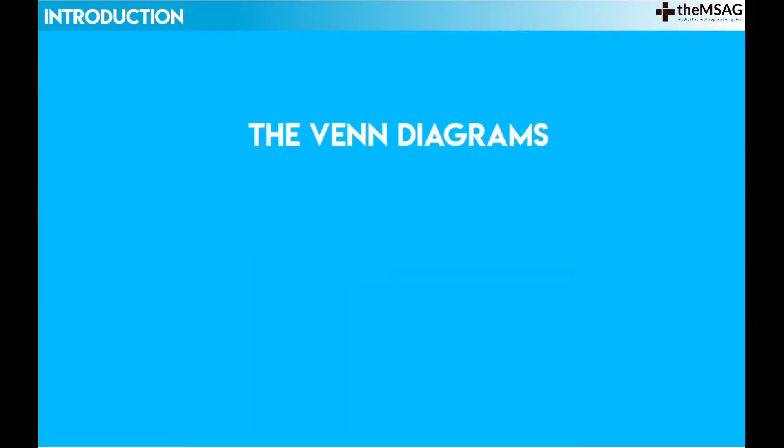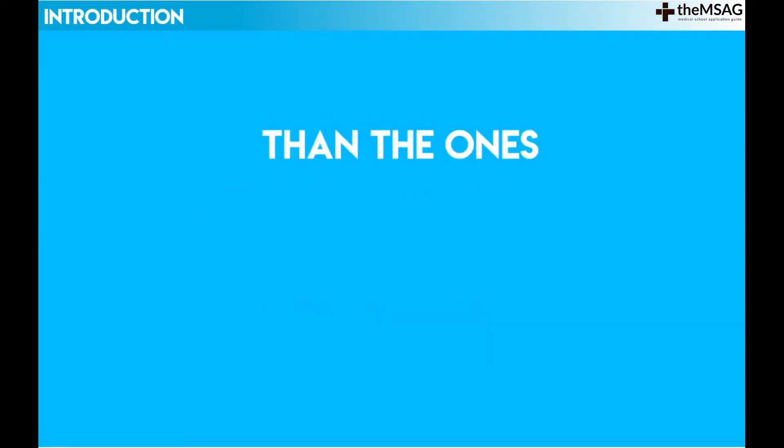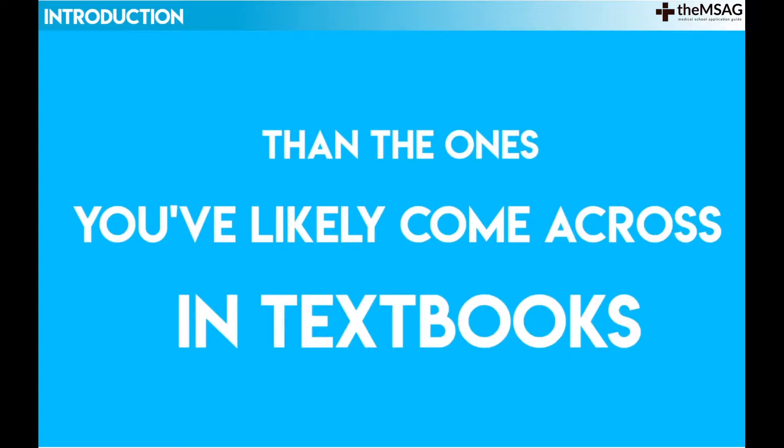Just a warning! The Venn diagrams in the decision-making subtest of UCAT are a bit funkier looking than the ones you have likely come across in textbooks. But don't let that put you off. Try to follow the simple approaches that we tell you about in this video and keep on practicing.